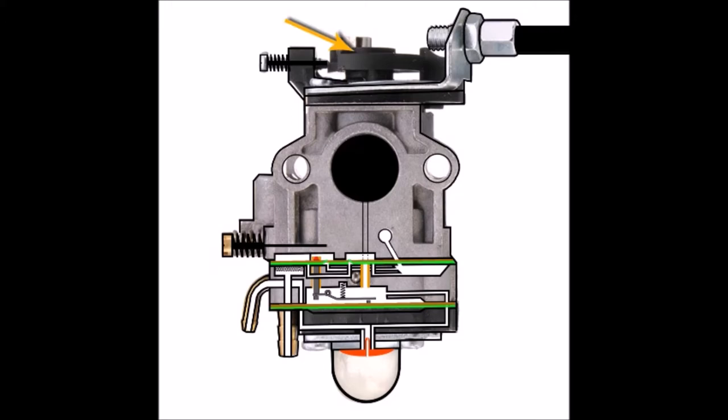This of course is the throttle cable that's connected to the trigger, the throttle trigger on the machine. This is the carburetor's throttle lever, and connected to that is the inner part of the throttle cable which moves its position. When the lever moves position it opens up the air hole here, the inlet, to allow air to go into the engine.